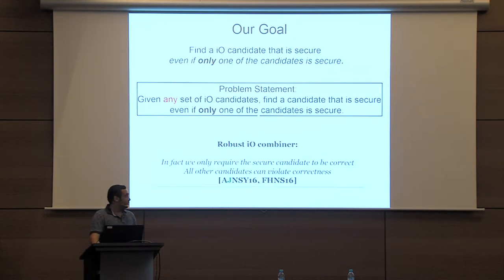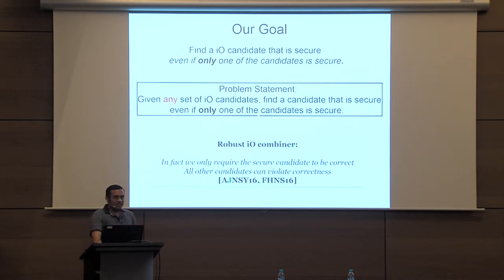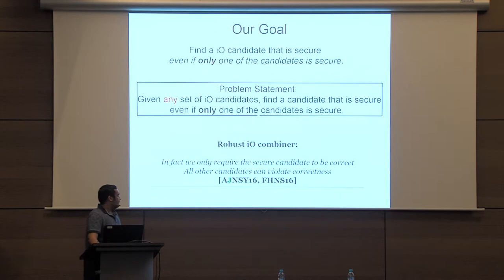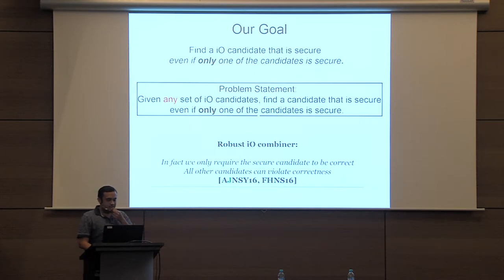What we actually study is a stronger form called a robust IO combiner, which has more relaxed requirements: we only require that the secure candidate is correct, while all other candidates can be arbitrary and can completely violate correctness. This was first studied by two concurrent works — AG NSY, which I was also involved in, and the work by Fischlin et al. in 2016.